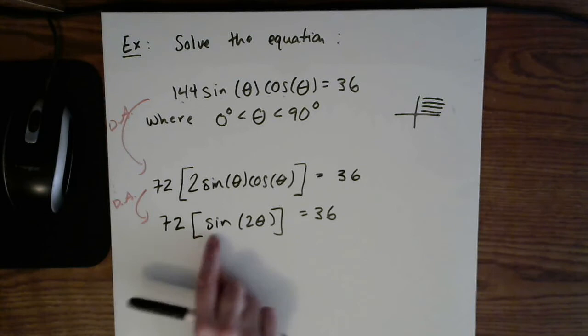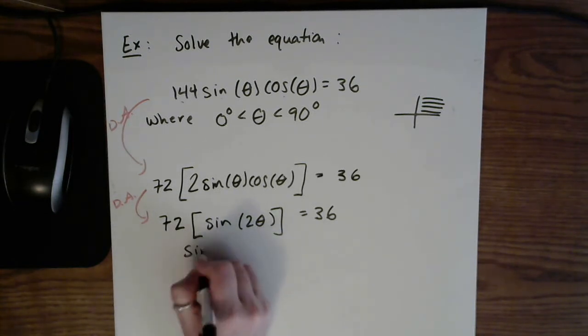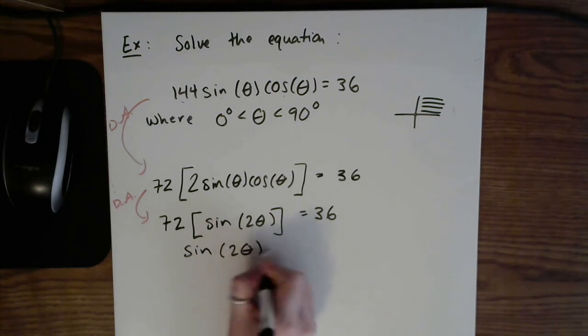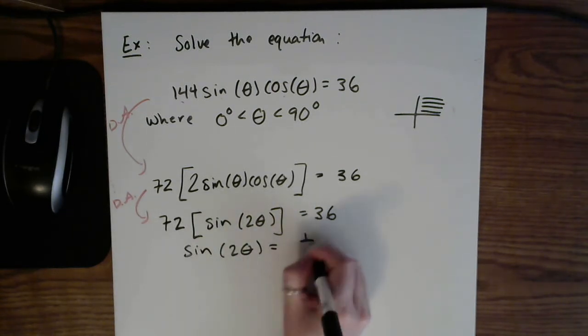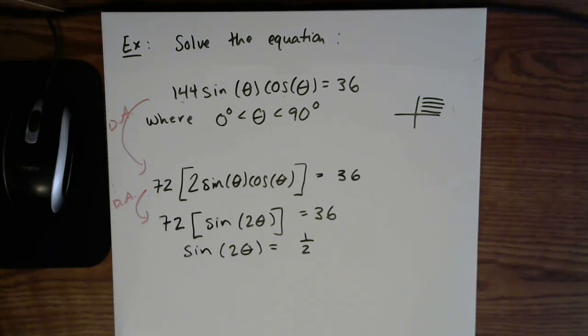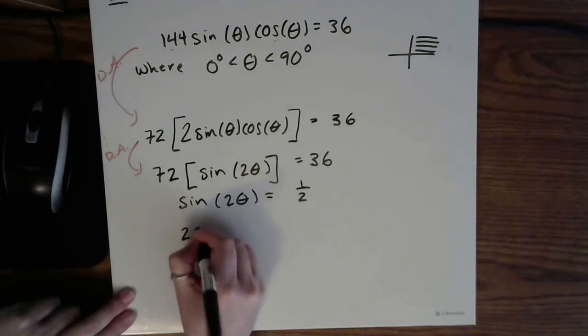Now isolate this trig function by dividing both sides by 72. 36 divided by 72 is one half. We know how to solve from here. Take inverses of both sides.